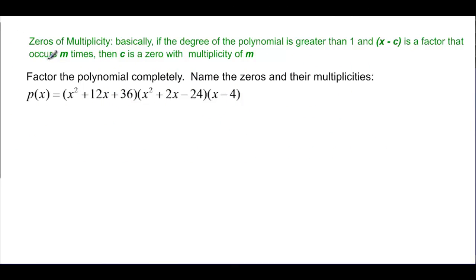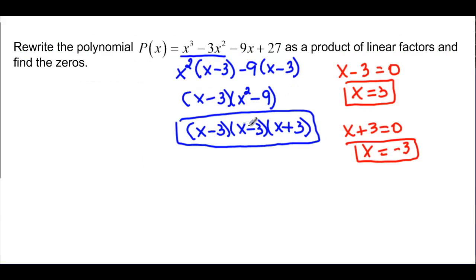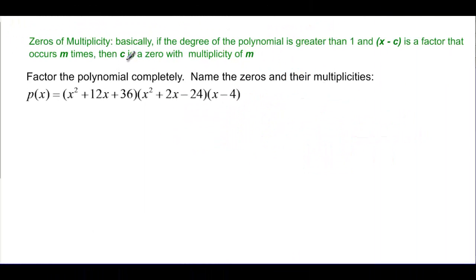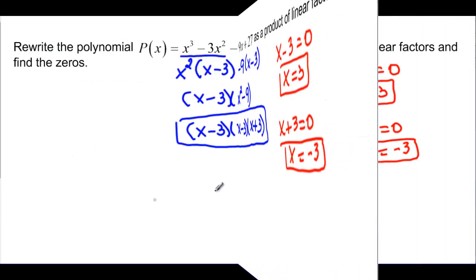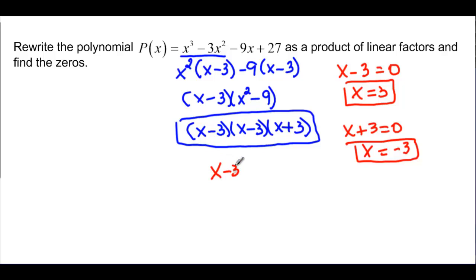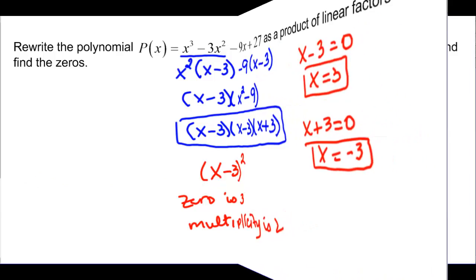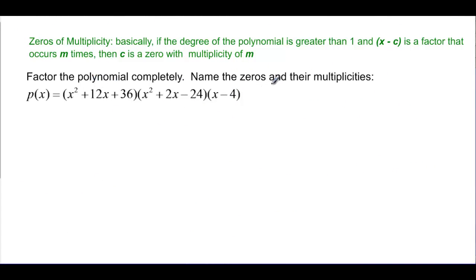The zeros are x = 3 and x = -3. Notice x - 3 appeared more than once, which brings us to zeros of multiplicity. If a polynomial of degree n has linear factors that occur more than once — like (x - 3) appearing twice — then the zero c has a multiplicity of m, where m is that exponent. We could write that as (x - 3)², so the zero is 3 with multiplicity 2. The exponent tells us how many times that factor occurs.